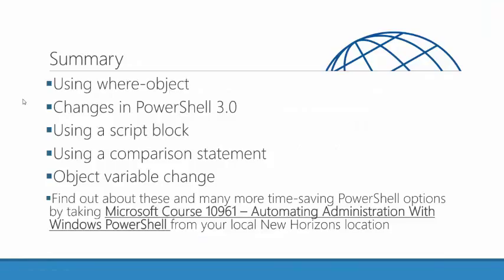Today we took a look at the Where-Object cmdlet — a little bit about what it does and how we can use it. Some changes that happened in PowerShell 3.0: using a script block or -Filter parameter versus the simplified comparison statement syntax. And we took a look at a quick change in that object variable — dollar underscore versus $PSItem. If you like these kinds of tips and PowerShell is a tool you want to put in your arsenal, I strongly recommend you take a look at Microsoft course 10961, Automating Administration with Windows PowerShell — a five-day class designed for system administrators so we can get our arms around this awesome tool and make our lives a little bit easier, more convenient, and more automated.